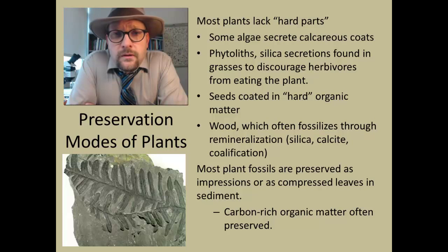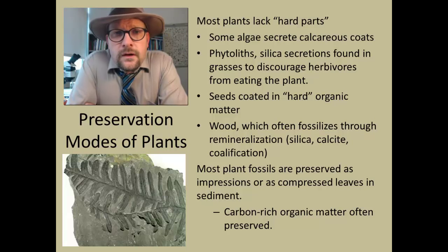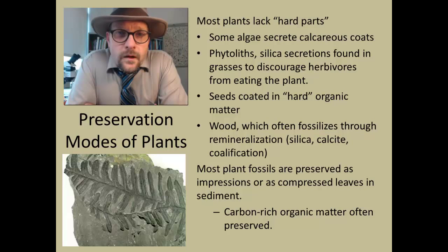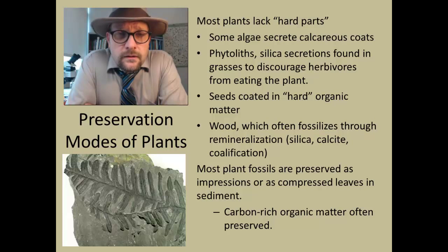Seeds themselves tend to be a very hard part, so when we talk about seed plants, some of those can actually have a calcareous or hard part to them, so they can be preserved. Wood, which is very hard and we use it as a building material, is often preserved. What is interesting about fossil wood, petrified wood, is that it is often replacement of silica or calcium carbonate into the original organic matter that composed the wood, although there is another process of coalification — that is, under heat and pressure, changing the wood into smaller chains of hydrogen and carbon. Those polymers become smaller and get compressed, and that is the process of coalification, which can produce coal, petrified siliceous fossil wood, or calcite petrified wood.